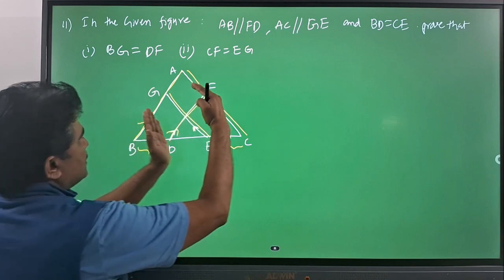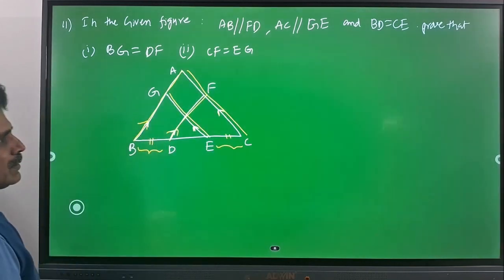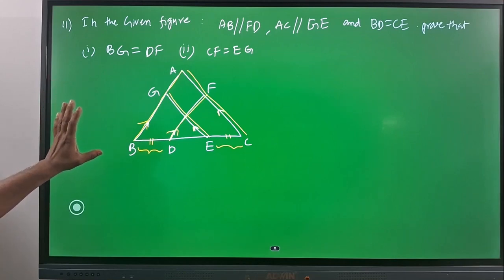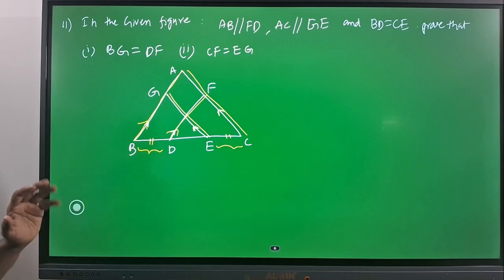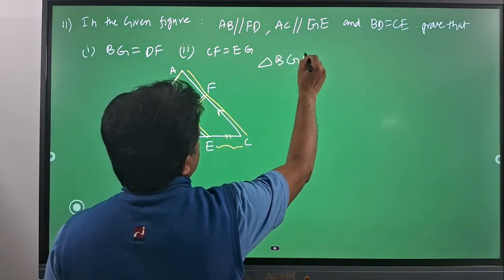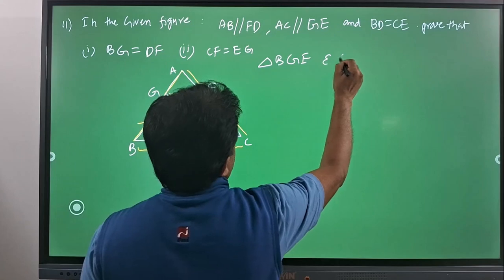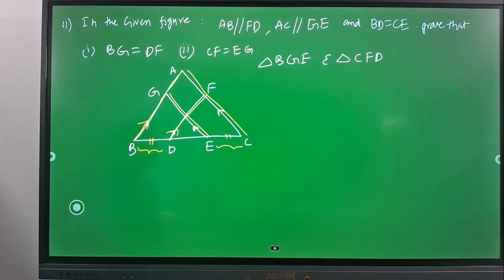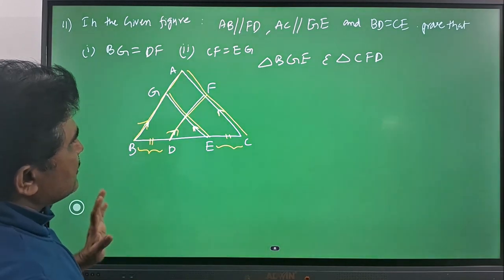We need to prove these two pairs of segments are equal. After seeing the picture, we come to know that there are some similar figures and there must be a congruency between two triangles. By seeing precisely, you will come to know that triangle BGE and triangle CFD seem to be congruent. Even with bare eyes, you can see those two figures are similar.